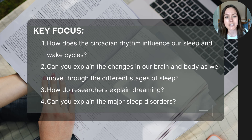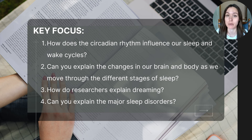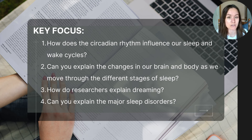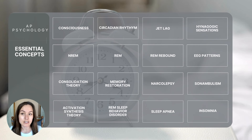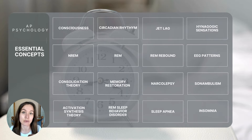After completing today's video, you should be able to answer the following questions: How does the circadian rhythm influence our sleep and wake cycles? Can you explain the changes in our brain and body as we move through the different stages of sleep? How do researchers explain dreaming? And can you explain the major sleep disorders? These are the essential concepts that will be covered, and by the end you should be able to define and describe them as they relate to sleep and sleep disorders.